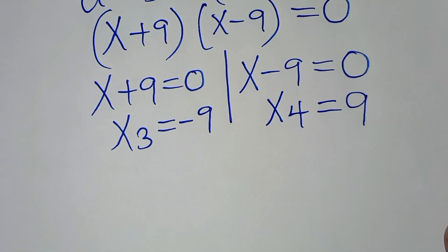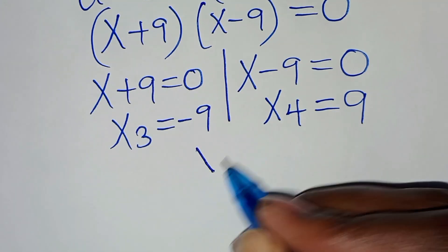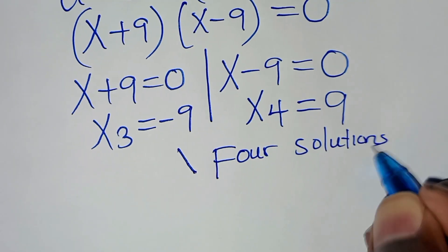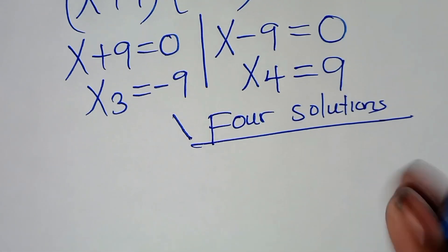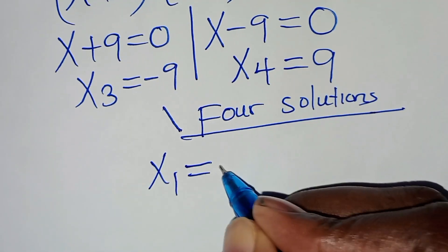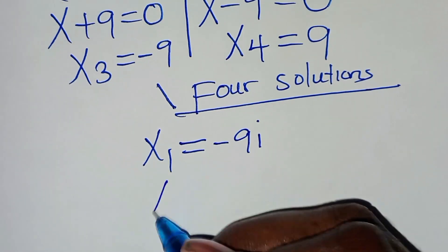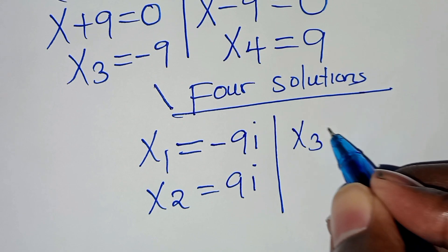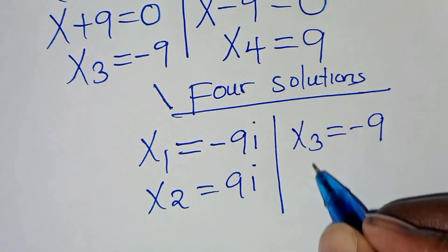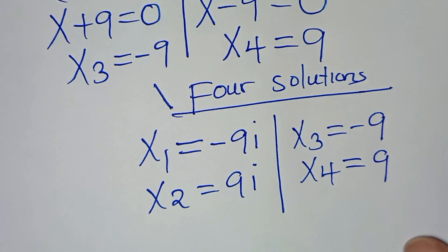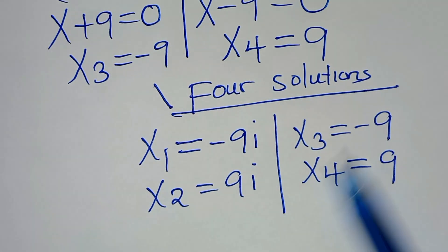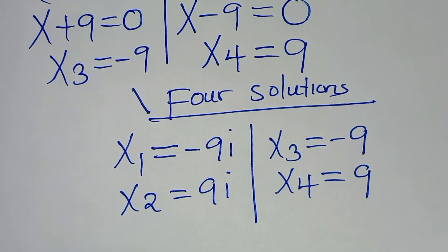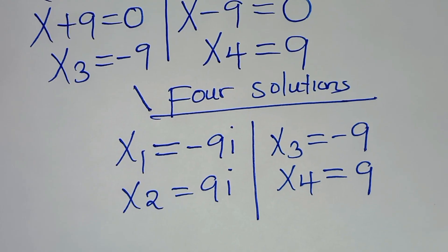So the next step from here is to verify. We have four solutions: x₁ is equal to minus 9i, x₂ is equal to 9i, x₃ is equal to minus 9, and x₄ is equal to 9. The next step is to verify that these four solutions satisfy the equation.